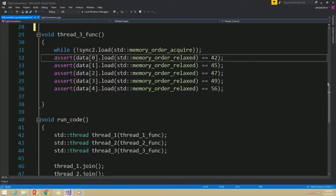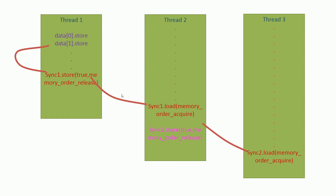Let me explain what happened here with the diagram. As shown in this diagram, thread 1 and thread 2 will have a synchronization-with relationship because of the store and load to the sync1 variable. Likewise, thread 2 and thread 3 will also have a synchronization-with relationship because of the store and load to the sync2 variable. Since synchronization is transitive, thread 1 and thread 3 also have synchronization. Therefore, thread 3 will see the store to the data.